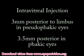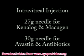We normally inject three millimeters posterior to the limbus in pseudophakic eyes and three and a half millimeters posteriorly in phakic eyes. We typically use 27 gauge needles for Kenalog and Macugen, and 30 gauge needles for Avastin and intravitreal antibiotics.